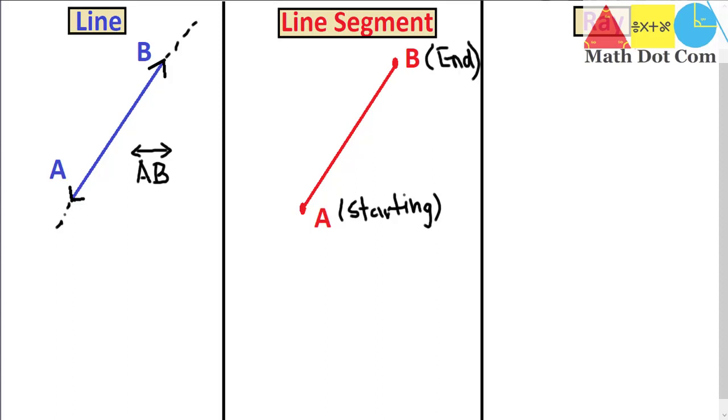So it does not go forever on both sides. Does not go infinitely on both sides. So in order to represent a line segment we usually write it as AB with a line without any arrows above it. So this is how we can represent a line segment.